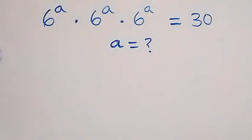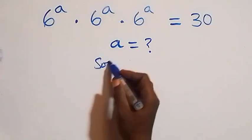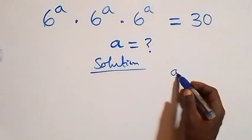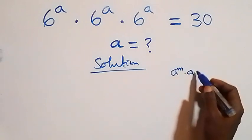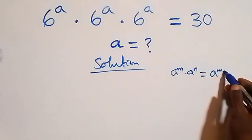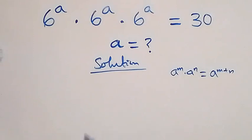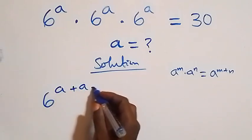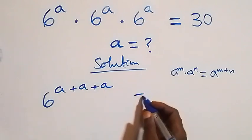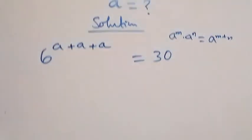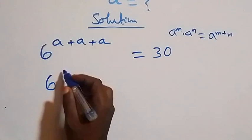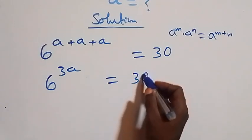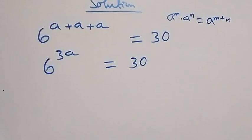Hello, you're welcome. Here's how to solve this nice exponential equation. From what is given, we apply the rule a^m × a^n = a^(m+n), so we can write 6^a × 6^a × 6^a as 6^(a+a+a), which equals 6^(3a). This equals 30.